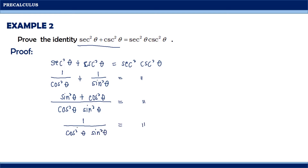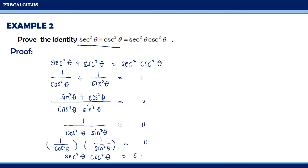Then this 1 can be expressed as a product of two fractions: 1 over cosine squared theta times 1 over sine squared theta. And finally, using reciprocal identities, 1 over cosine squared theta equals secant squared theta, and 1 over sine squared theta equals cosecant squared theta. Notice now that the left side equals the right side of our equation. Hence, the given forms an identity.